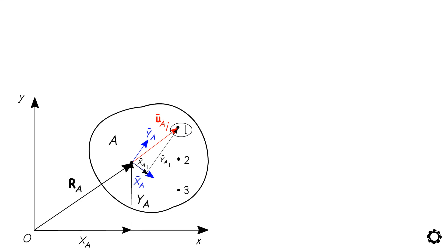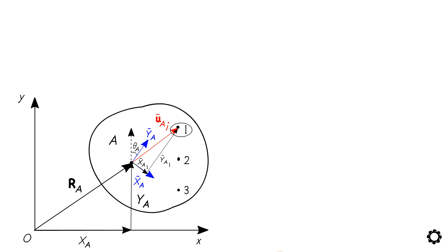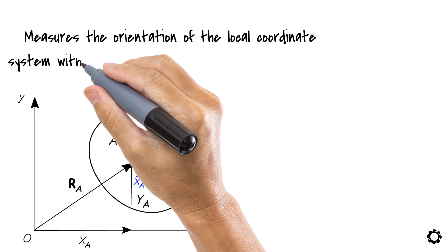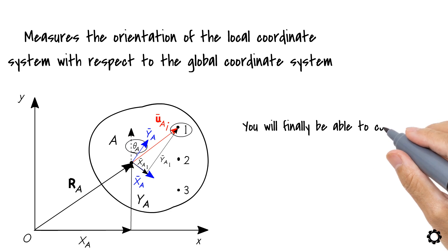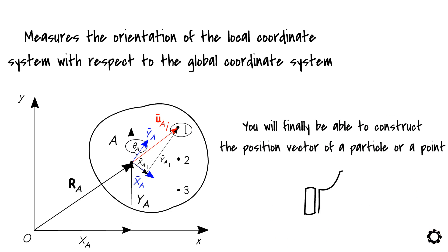However, one thing remained pending. What was the purpose of the angle theta_a? This angle measures the orientation of the local coordinate system with respect to the global coordinate system. By the end of the video, you will finally be able to construct the position vector of a particle or a point as an expert would do it.